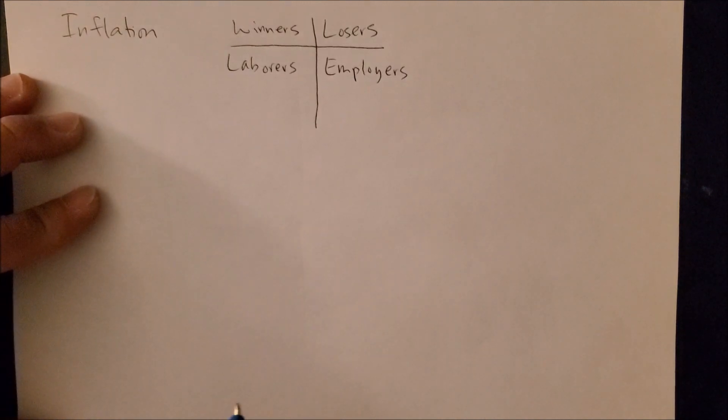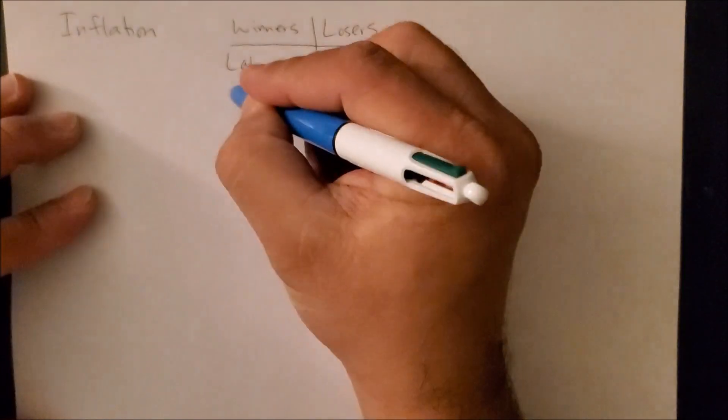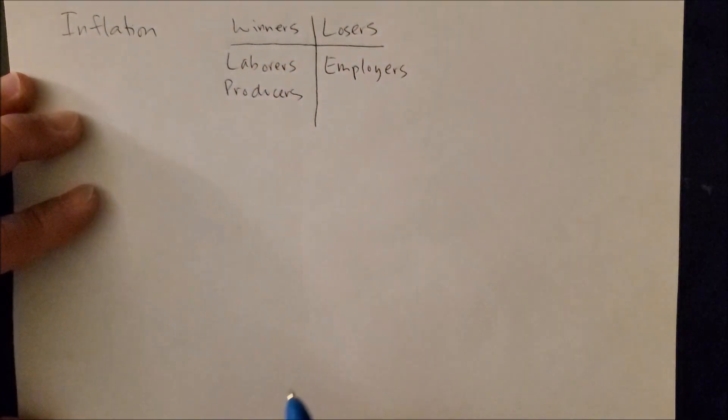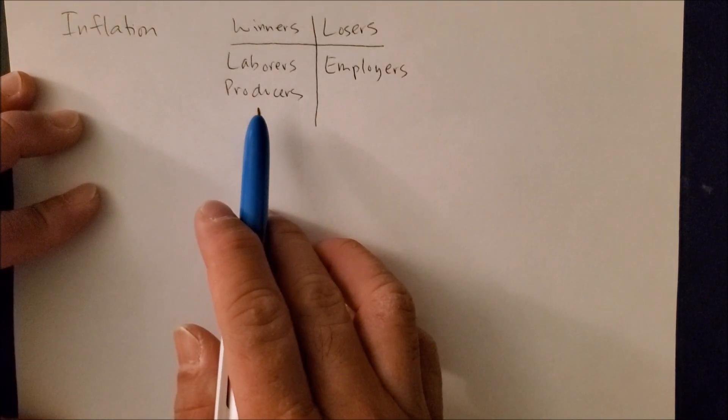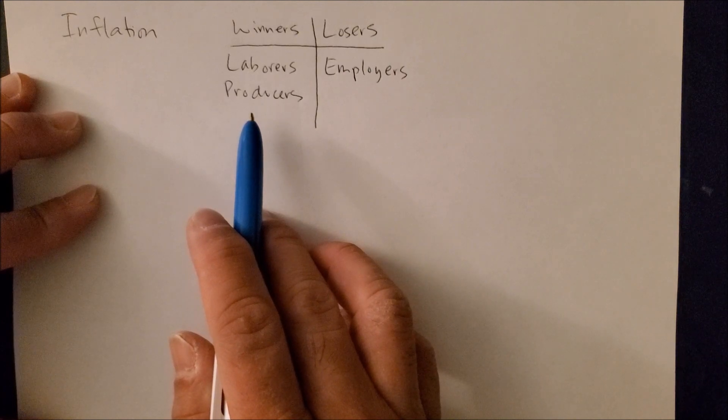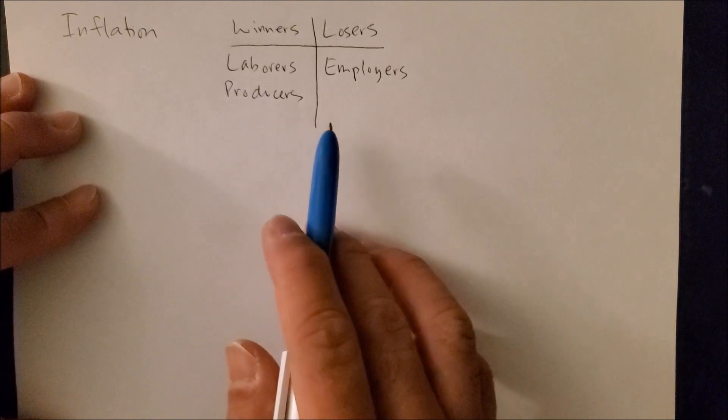Now at the same time for inflation, another group that wins often are those who are producers. And the law of supply states as price of a good increases, producers will produce more. So producers during inflation are motivated to make more goods.